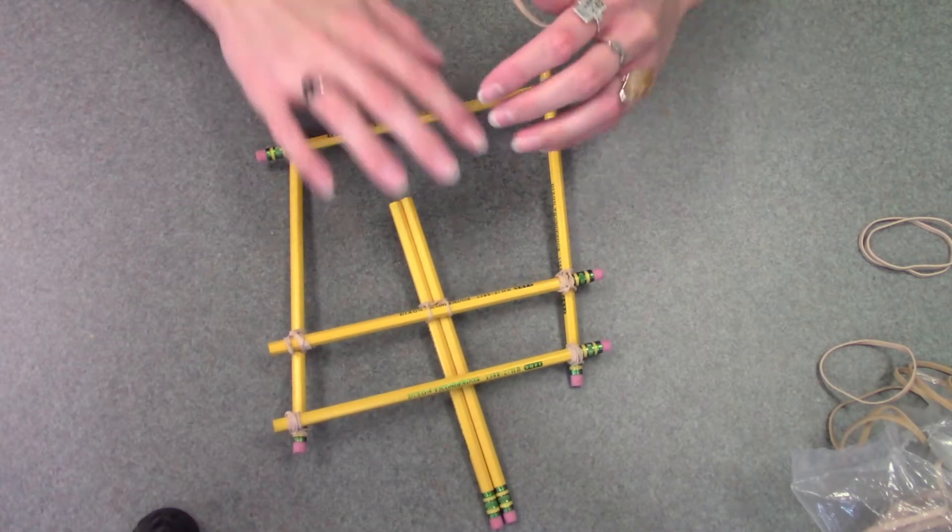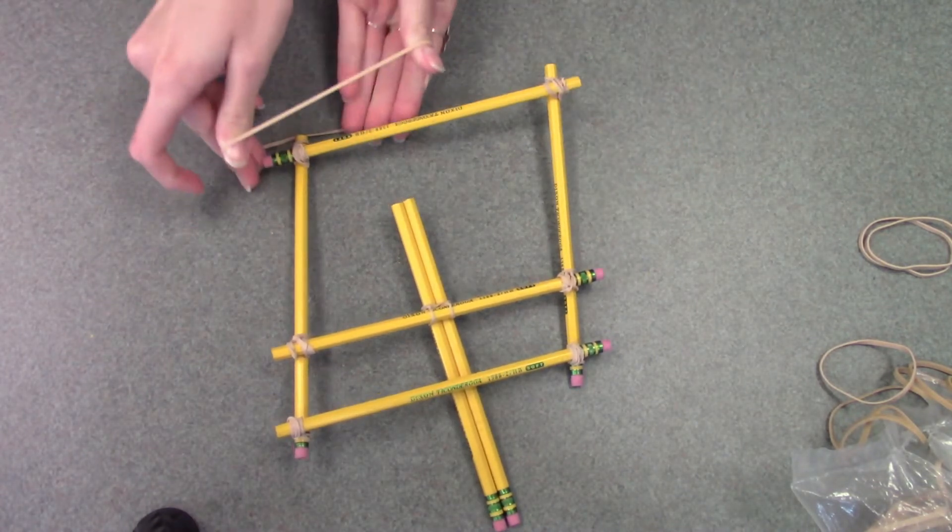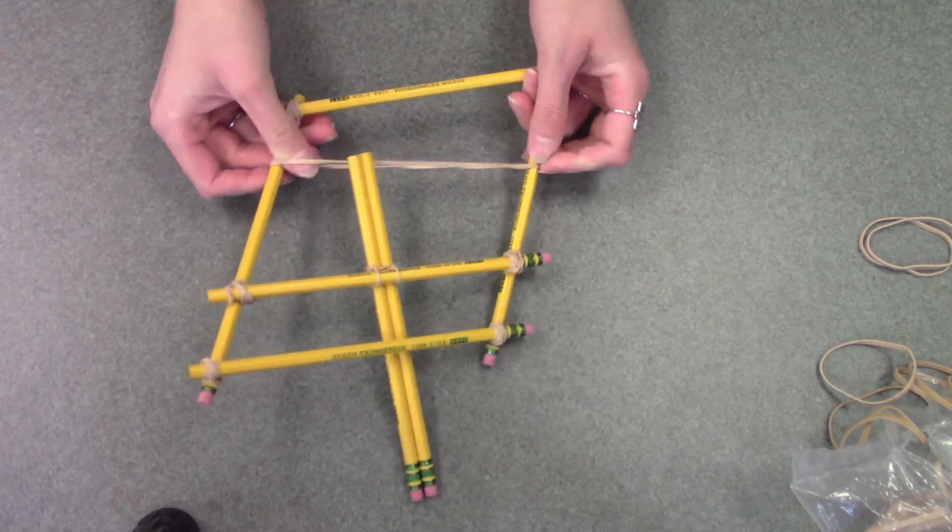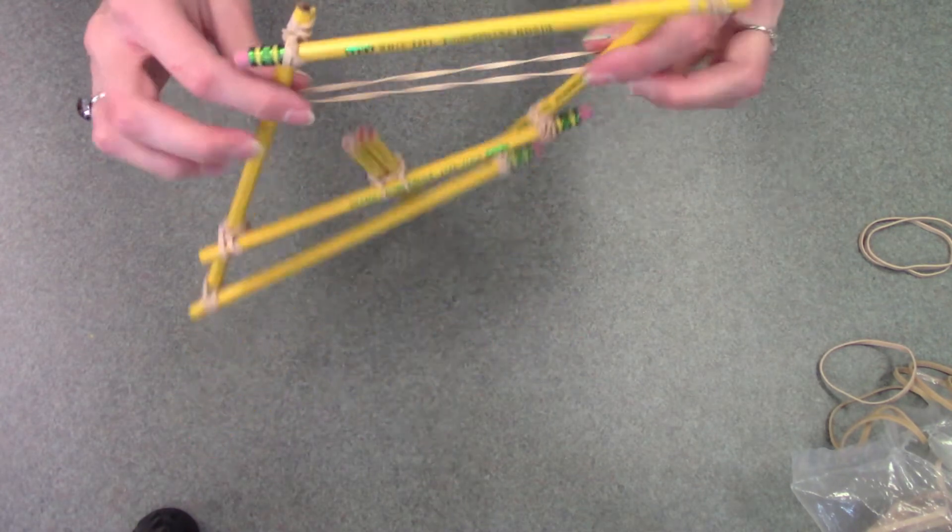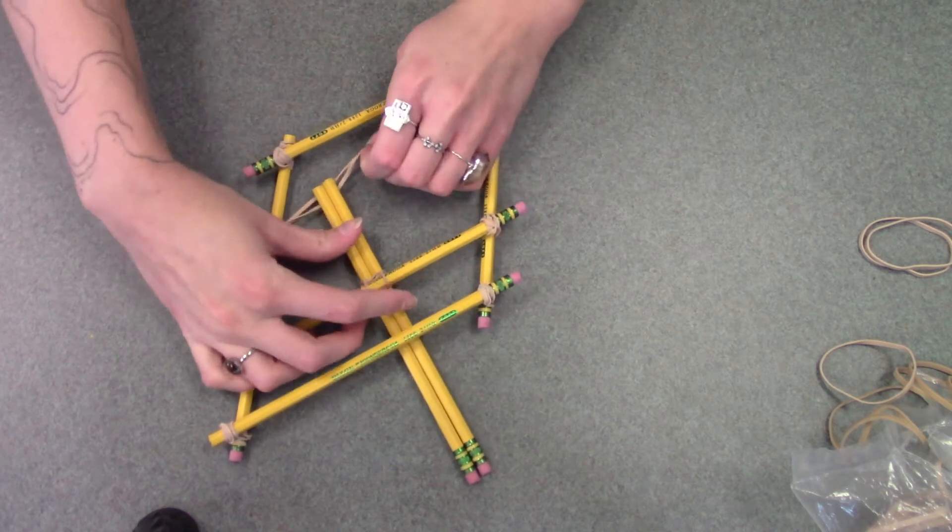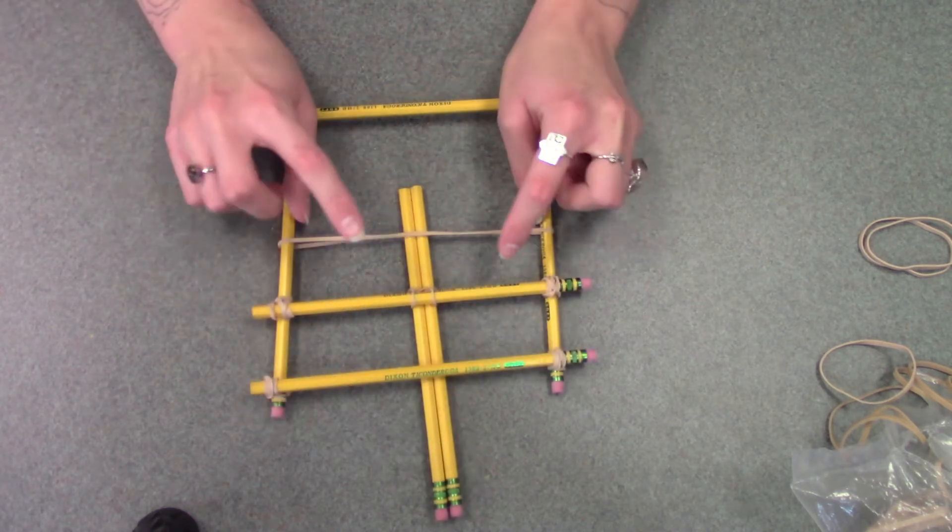Once you have the front frame done, you're going to take another rubber band and quickly put it around the bottom of it. Push it up to where it's just kind of sitting on the sides. And make sure that it is in front of the bottom two pencils, just like that.